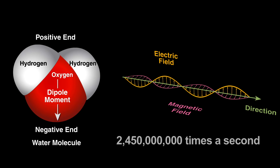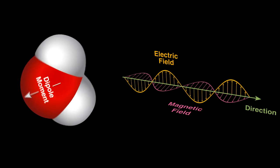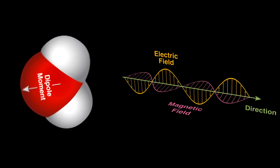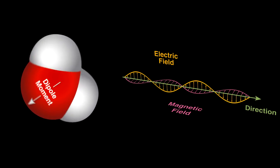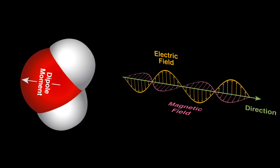For this oven, the direction of the fields change 2.45 billion times per second. Water will try to align with the radiation's electric field. The changing field rocks the water molecules back and forth rapidly, and molecular friction from this creates heat as the motion disrupts the hydrogen bonds between neighboring water molecules.